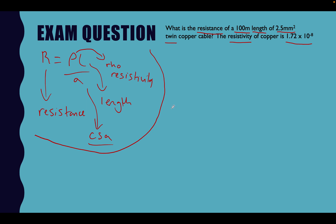Let's analyze our question and input values into the formula. We're looking for the resistance, which equals the resistivity. In our case, the resistivity of copper is 1.72 times 10 to the minus 8 — that means per ohm-meter of copper, the resistivity at one meter is 1.72 times 10 to the minus 8. We then multiply that by the length, which in our question is 100 meters — resistivity multiplied by length.